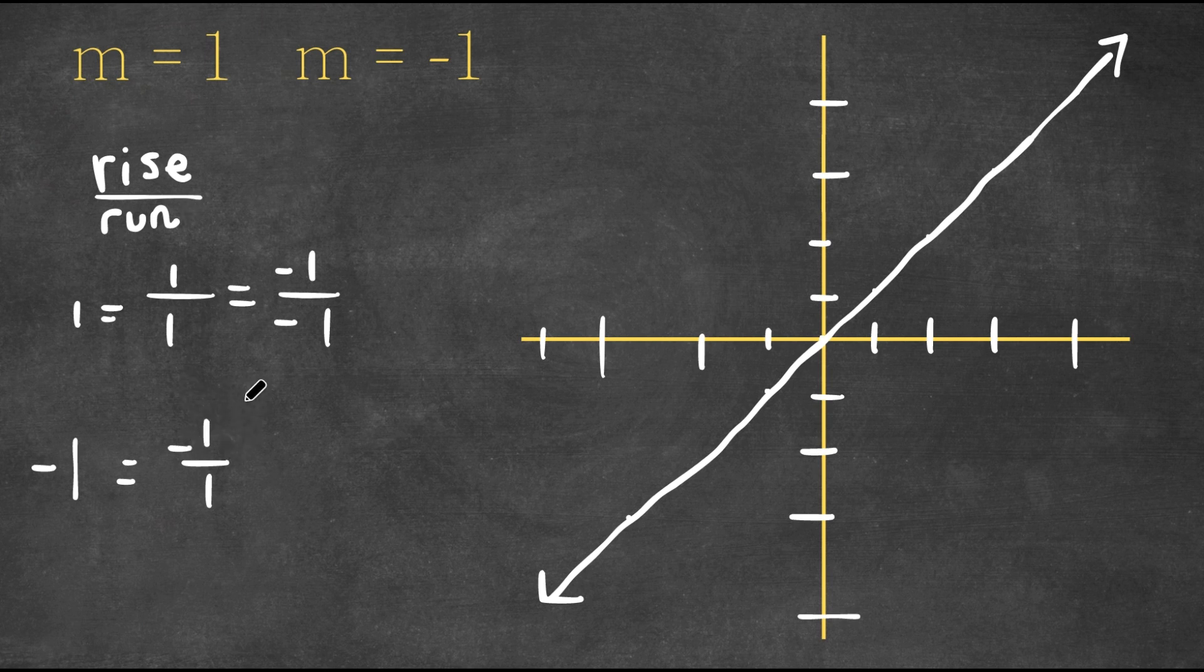So for rise over run, well, as you see, this is negative one. So our rise, this would be negative, so we go down. So now we go down by one, and we still go to the right by one because the run is positive.